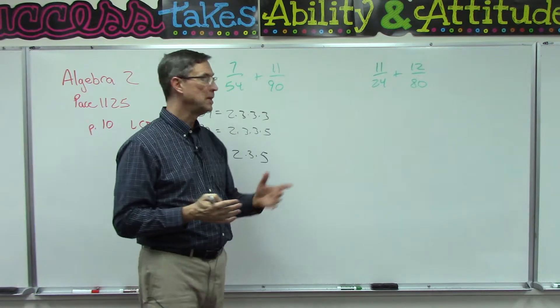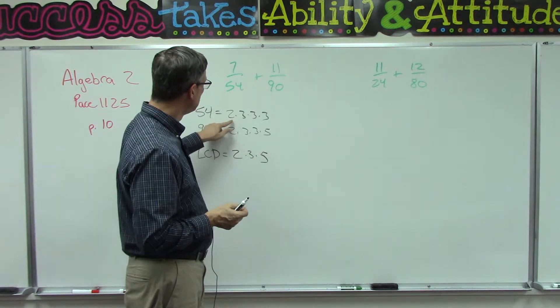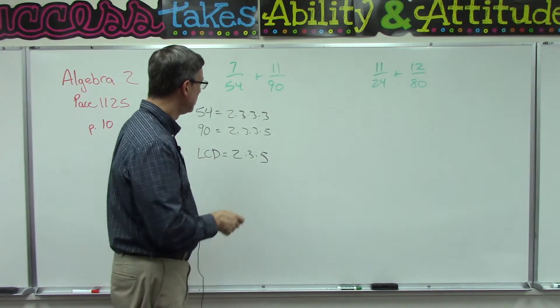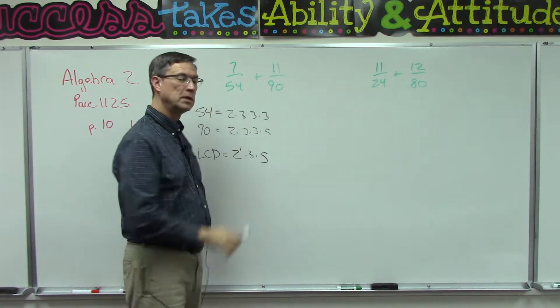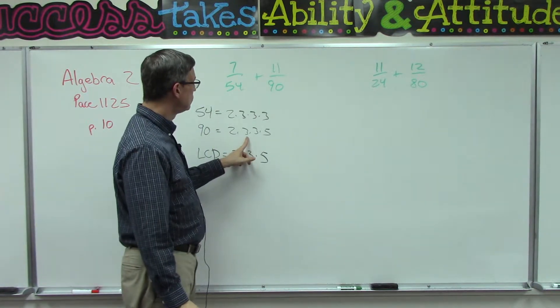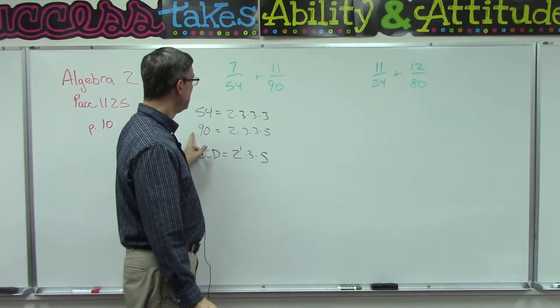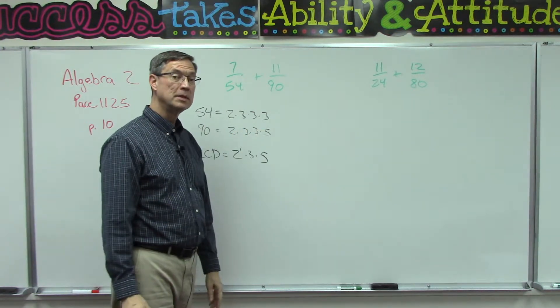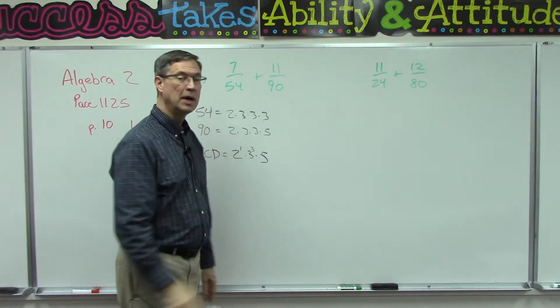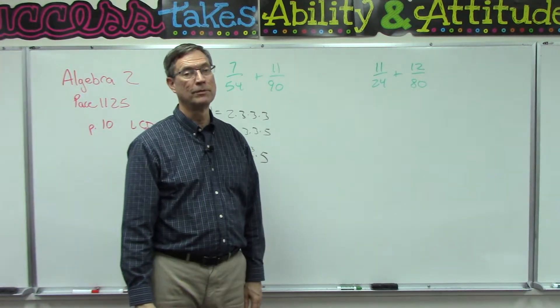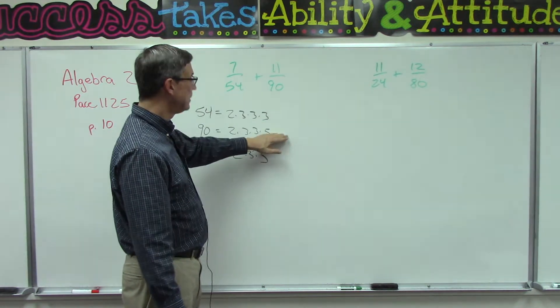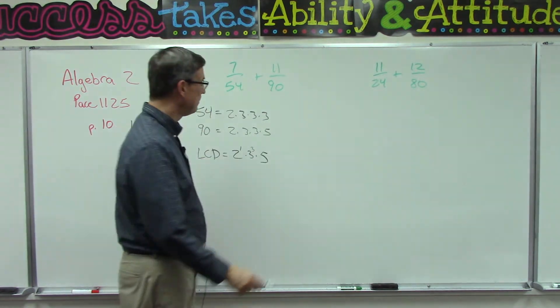Let me say that again. I'm going to use each of these factors the most number of times that is used in either of these numbers. 2 is used once here, it's used once here, so I only use it once in the LCD. 3 is used twice in 90, but look at that, it's used three times in 54, so I need to use it three times in my final answer.